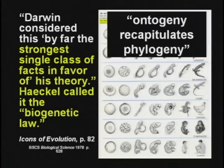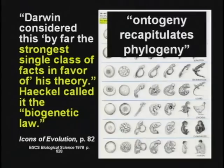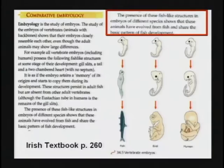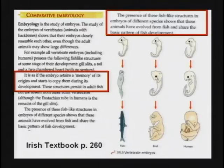Ontogeny is the growth of the baby — it goes through stages. Recapitulates means it reenacts or does over again. Phylogeny is the evolutionary sequence. This Irish textbook says: the presence of fish-like structures in embryos of different species shows these animals have evolved from fish and share the basic pattern of fish development. It's as if the embryo retains a memory of its origins and starts to copy them during its development.